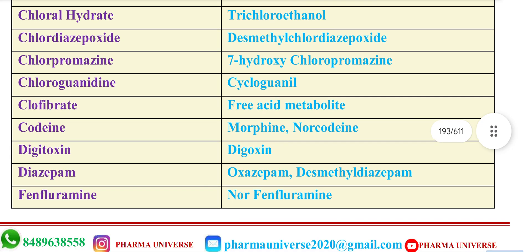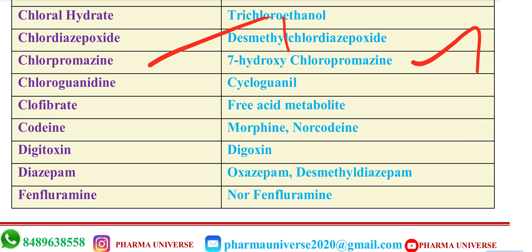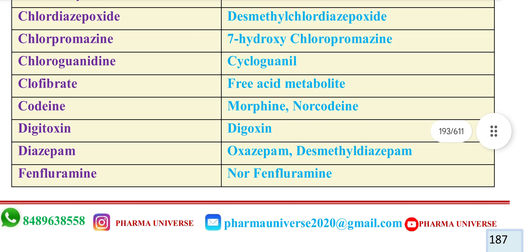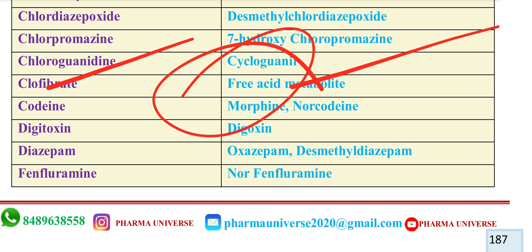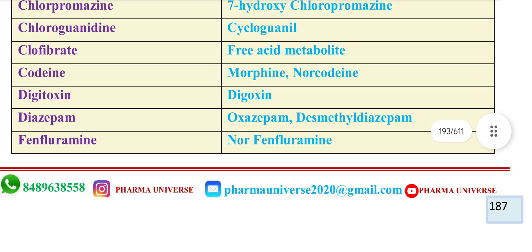Chlorpromazine's metabolite is 7-hydroxy Chlorpromazine. Clofibrate's metabolite is Cyclopropanol — the free acid metabolite, a fibrate metabolite. Codeine's metabolites are Morphine and Narcoteine.